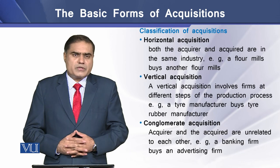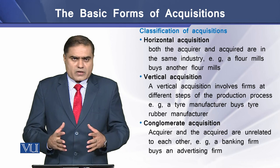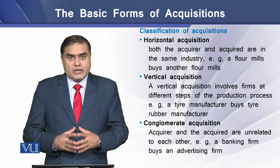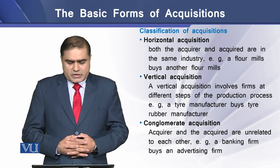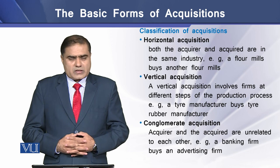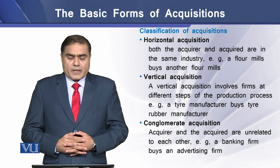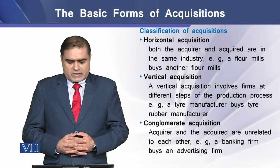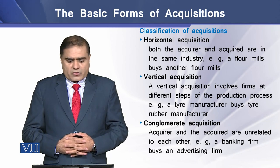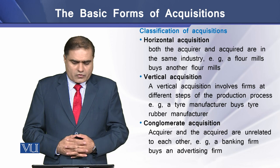Classification of acquisitions. We can classify acquisitions in three formats. The first is horizontal acquisition — this is the case where both the acquirer and the acquiree are in the same industry. For example, a flour mill buying another flour mill.